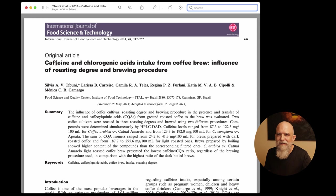This specific paper here, you can see the title, Caffeine and Chlorogenic Acids Intake from Coffee Brew, Influence of Roasting Degree and Brewing Procedure. So we know from looking at the title that they're going to look at at least a couple of variables, one being the influence of the roast degree, and another variable being the brewing procedure. We're also looking at caffeine and chlorogenic acids. So we have a lot of moving parts in this article.